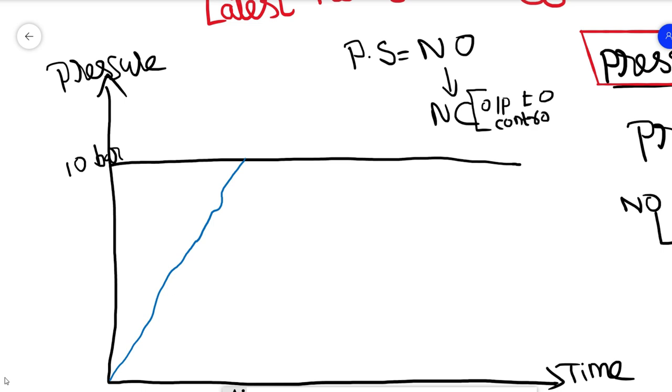And by this way it gave an output signal to the process requirement to control the pressure. So now something happened in the process. So the pressure starts to decrease.